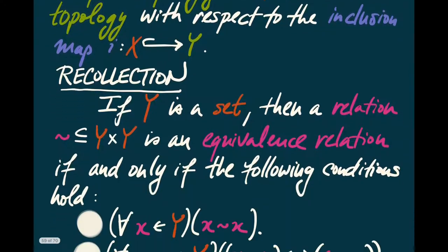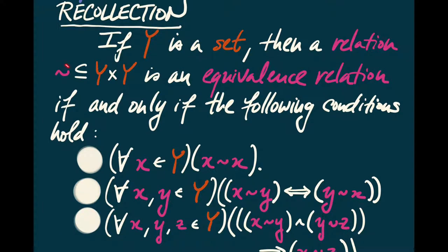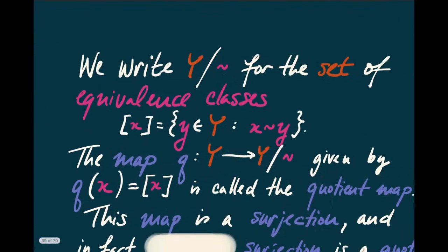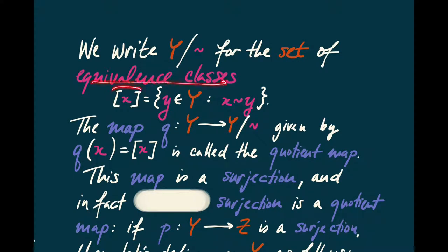To discuss this, we should recall how equivalence relations work. If we have a plain set Y, a relation is an equivalence relation if and only if: every element is related to itself (reflexivity); if X is related to Y then Y is related to X (symmetry); and if X is related to Y and Y is related to Z, then X is related to Z (transitivity). If we satisfy these three conditions, we have an equivalence relation.